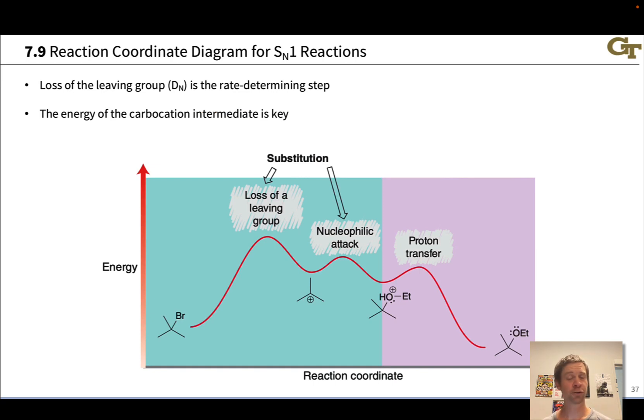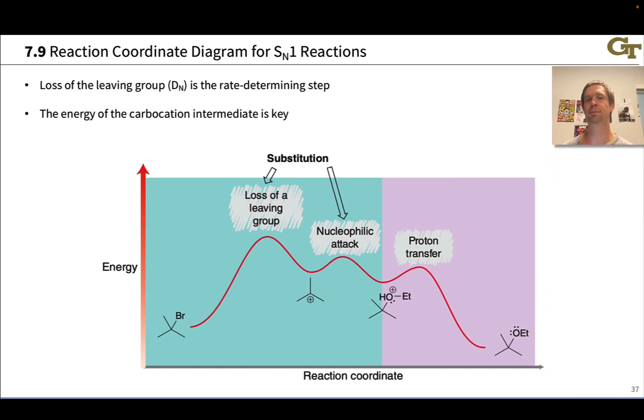The SN1 reaction is really our first example of a multi-step mechanism in organic chemistry, and because it's multi-step, its reaction coordinate diagram looks quite a bit more complex than the one-step SN2 mechanism. Loss of the leaving group is the rate-determining step, and this is universally endothermic, because we're going from a neutral starting material to charged products, the carbocation and bromide anion in this case.